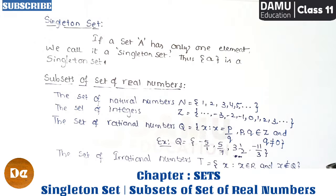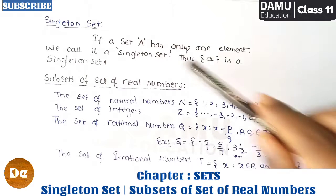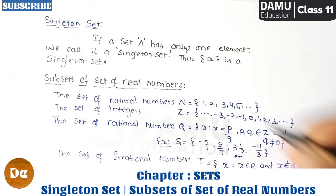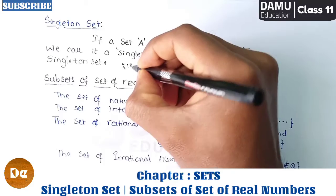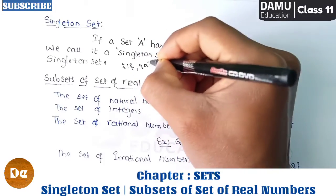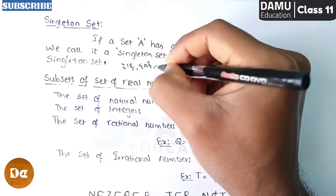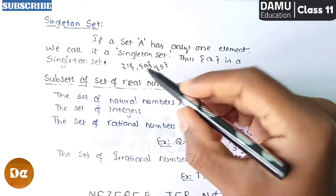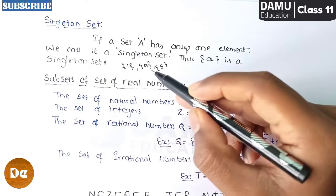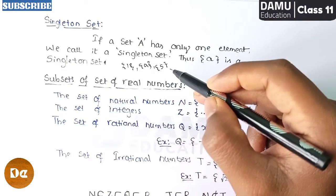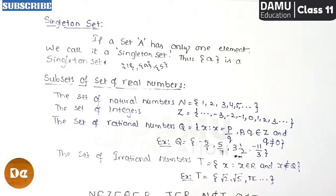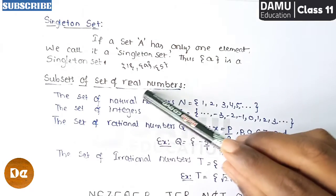A singleton set is not equal to a null set or empty set. These are all sets that contain only a single element — for example, {1}, {a}, and {s}. These are called singleton sets.